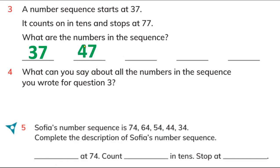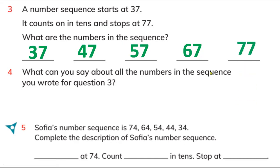We have to change the tens place each time. Four plus one is five, and with seven in the ones place that makes 57. Then five plus one is six, giving us 67. The last number is already given: six plus one is seven, and with seven in the ones place that is 77. That's how you make the sequence.